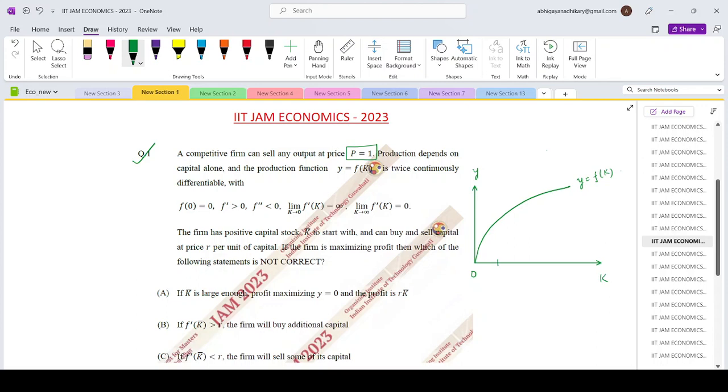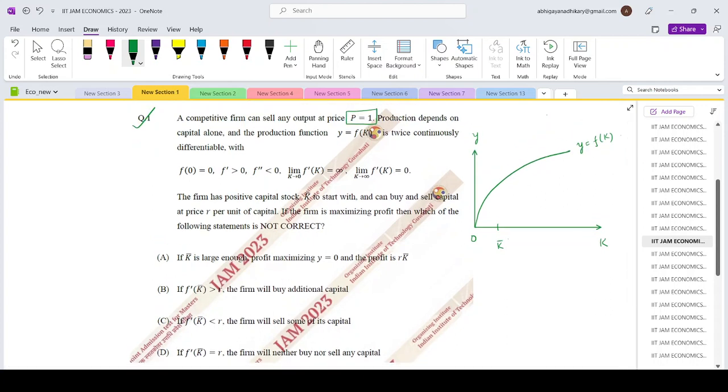To start with we have an initial level of capital. Now the question is the firm is trying to maximize profit. So what will be the profit expression? It will be price into quantity which is F of K minus K into R. Price is 1, so that is simply F of K minus K times R.